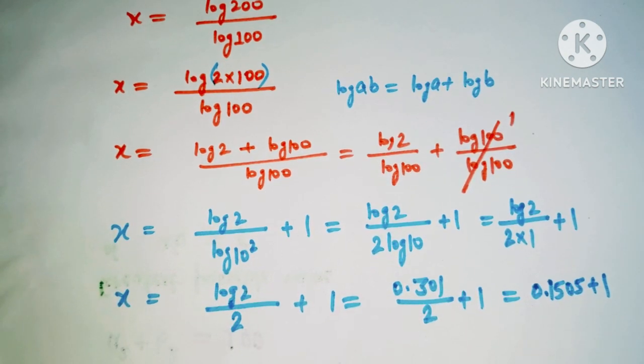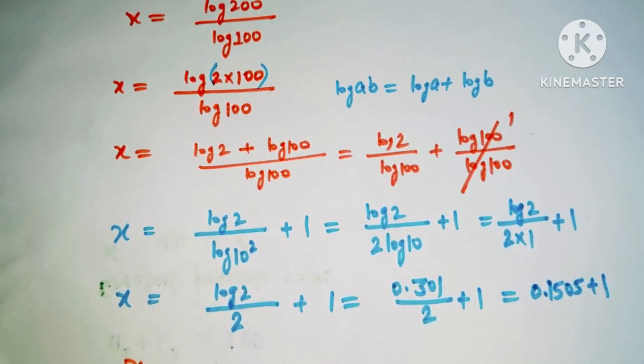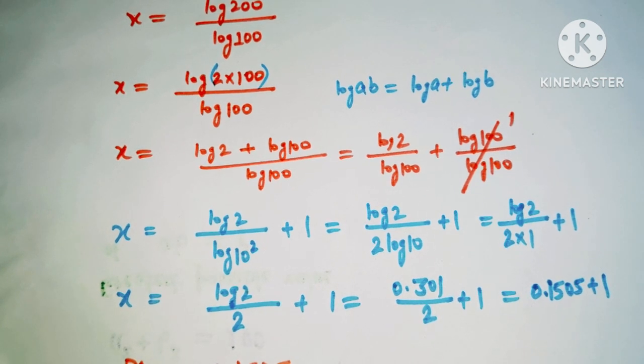Hence we can say that the value for x is 1.1505, and this is our solution.